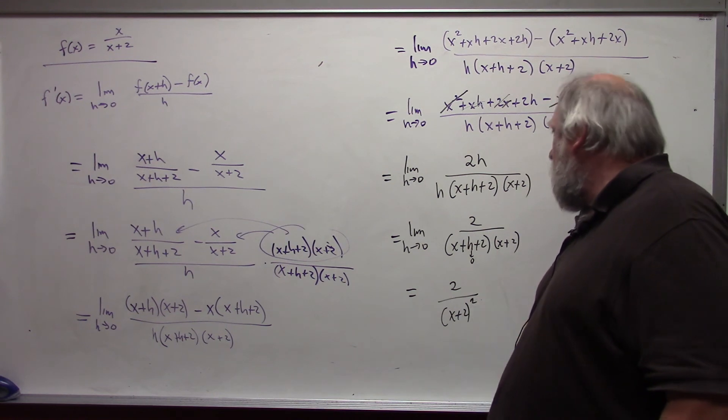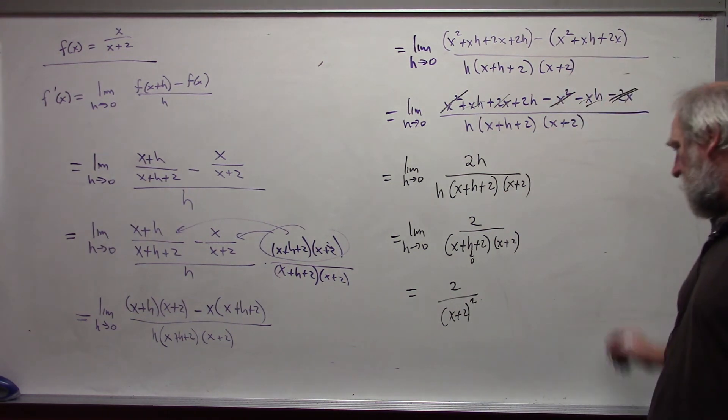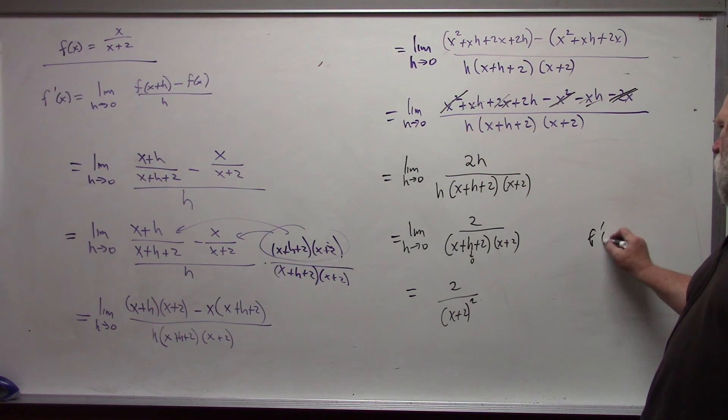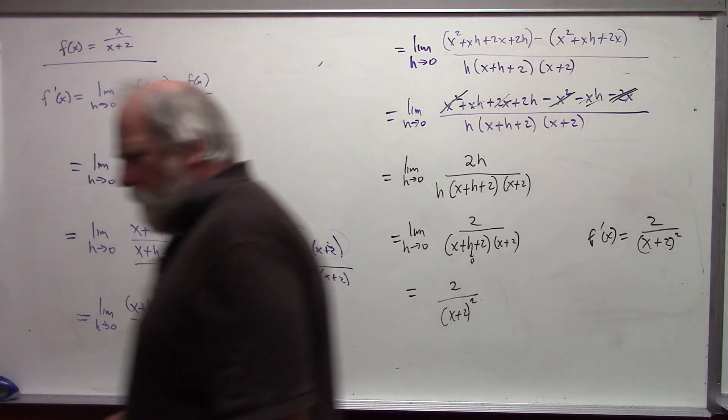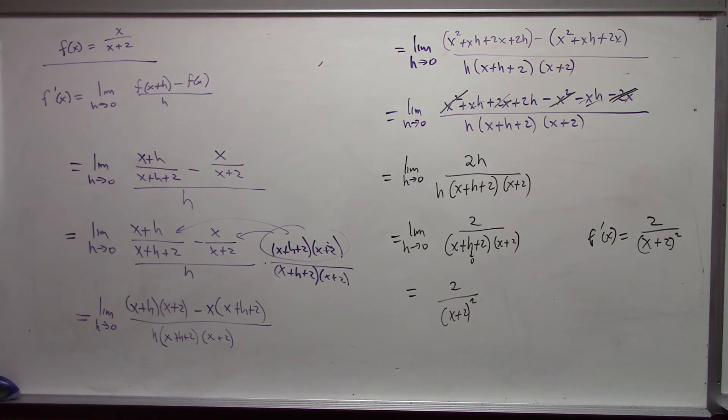This is the derivative function. f prime of x, in this case, is 2 over x plus 2 quantity squared.